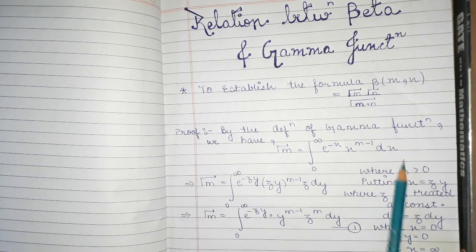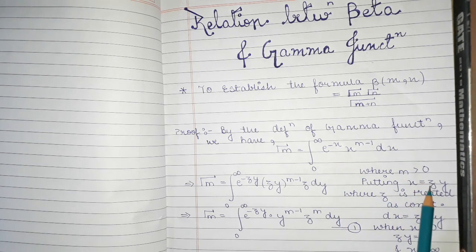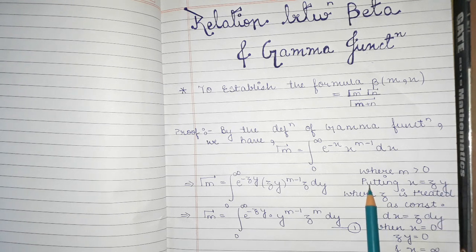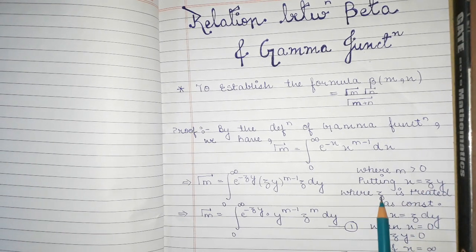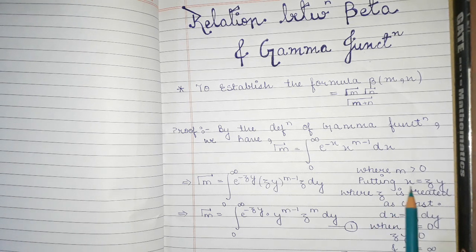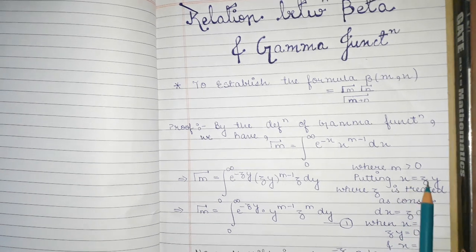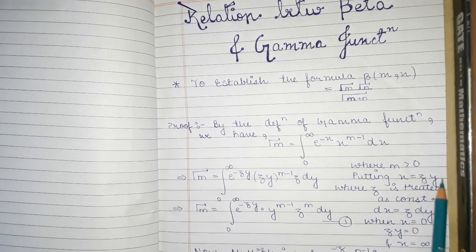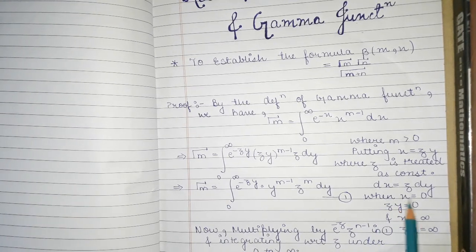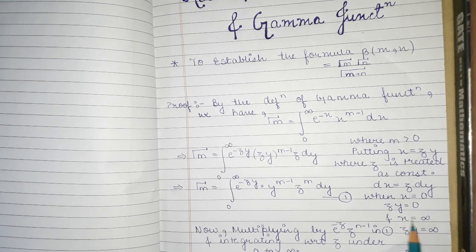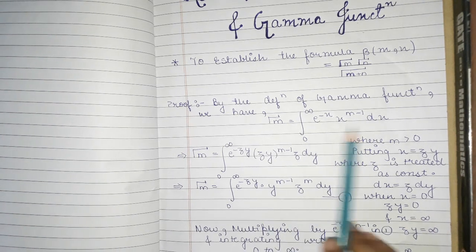Now let's substitute x = zy in this expression, where z is treated as a constant. Then dx = z dy. We also need to change the limits: when x = 0 we get zy = 0, and when x = infinity, zy is also infinity. So the limits remain the same.